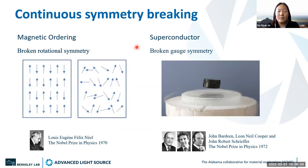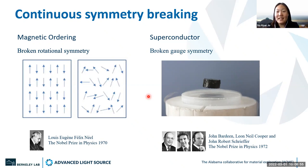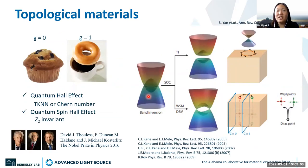So far in condensed matter physics, phase transitions have been understood within the Landau picture by establishing an order parameter through continuous symmetry breaking. For example, magnetic ordering has been understood with broken rotation symmetry, and superconductivity was understood with broken gauge symmetry. However, recently a new material class that cannot be understood with this spontaneous symmetry breaking picture has been realized — and that is topological materials. Topological materials can be understood with the mathematical concept of topology.